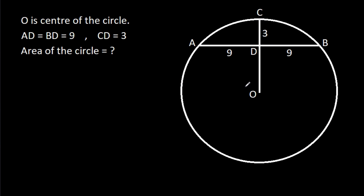In this video, we have been given that O is the center of the circle and AD is 9, BD is 9, CD is 3, then we have to find the area of the circle.